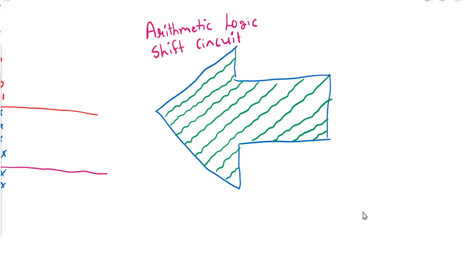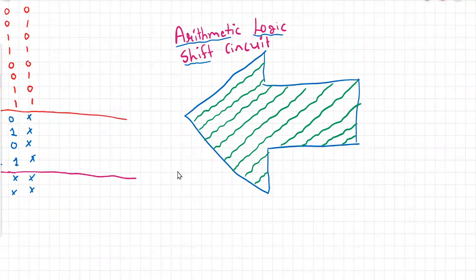Hello students. Today's topic is the arithmetic logic shift circuit, which will be the concluding session for this chapter. So far we have discussed arithmetic circuits, logic circuits, and shift circuits. In this topic we will combine all three to form the arithmetic logic shift unit — an accumulator unit that performs arithmetic, logic, and shift operations and stores the immediate result.